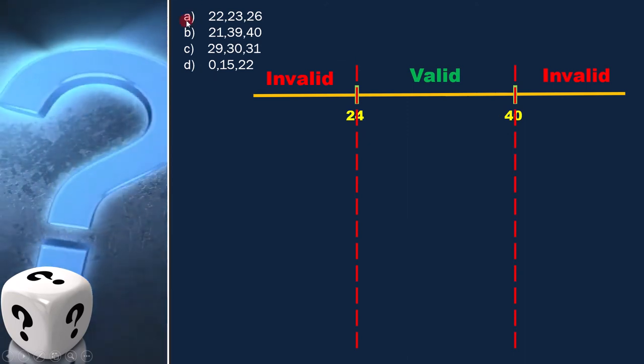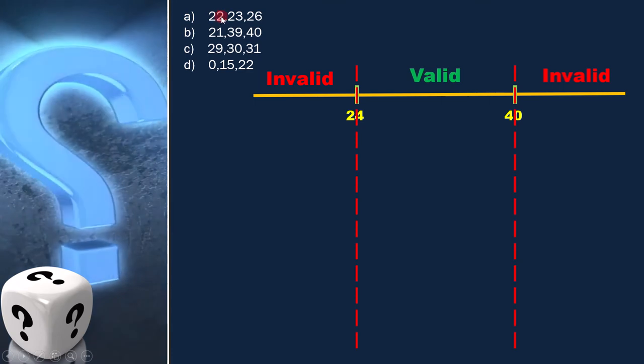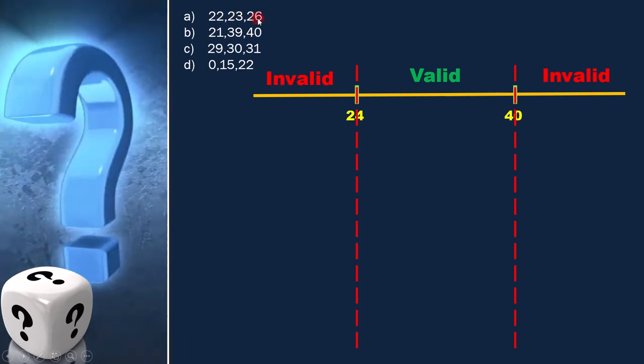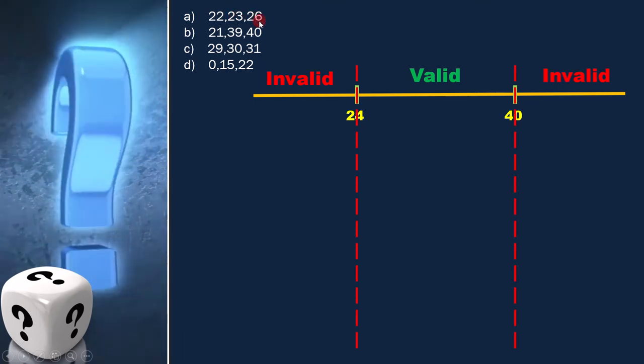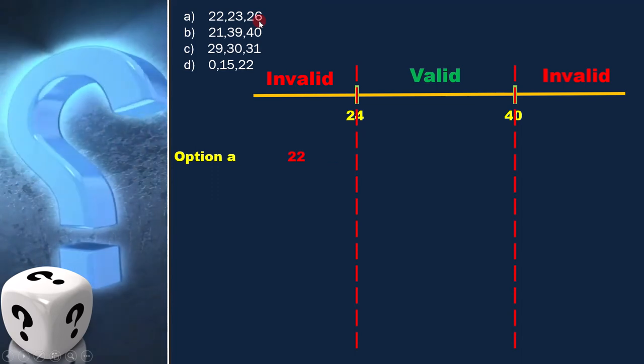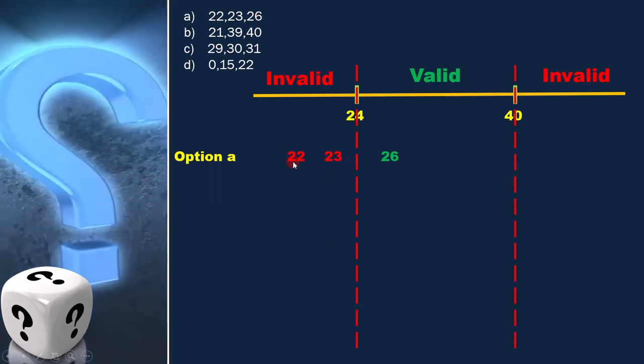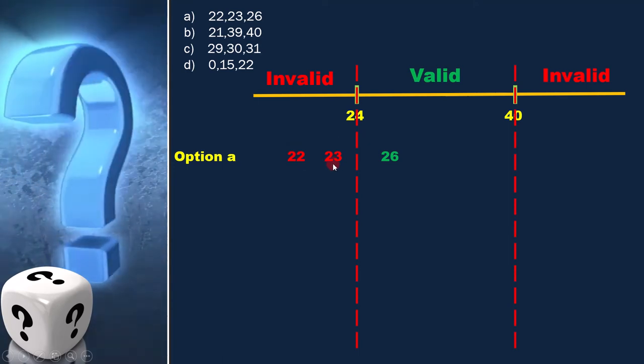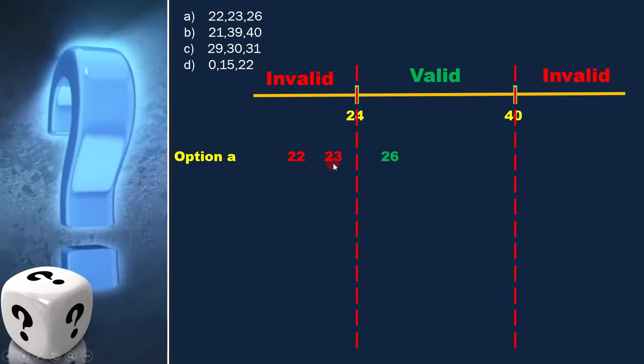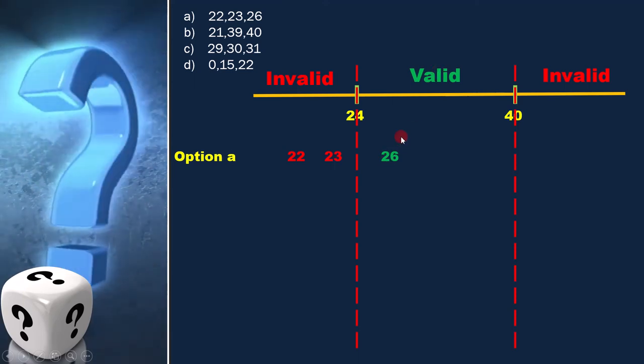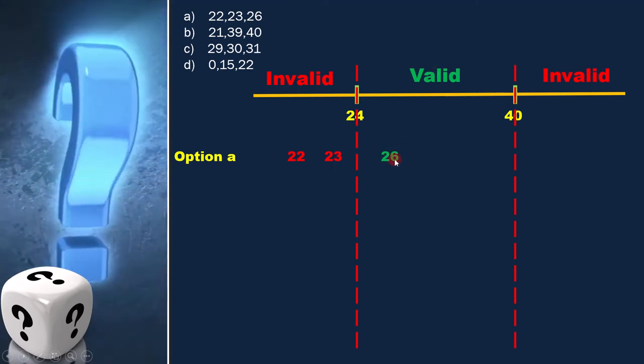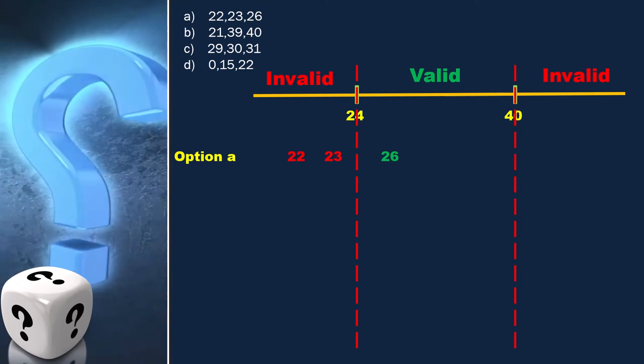The first option is 22, 23, and 26, and we can place them here. In this option, 22 and 23 are in invalid range and 26 is in valid range. Therefore, this option is not the answer.